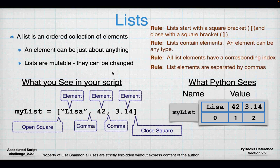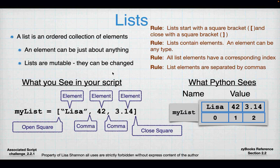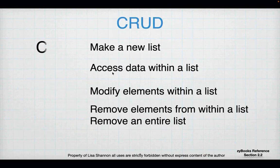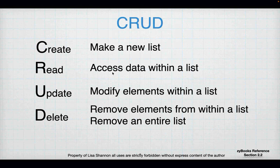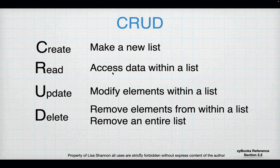Lists always start with an opening and a closing square bracket. A list can contain elements of any types. All lists have a corresponding index, no different than a string, and everything is separated by a comma — which is different from a string where you don't separate out the elements. You're going to hear me talk about CRUD in this class. CRUD is an acronym: Create, Read, Update, Delete. What can you do with a list? You can create a list, read data from it, update elements in it, and delete elements or the entire list.